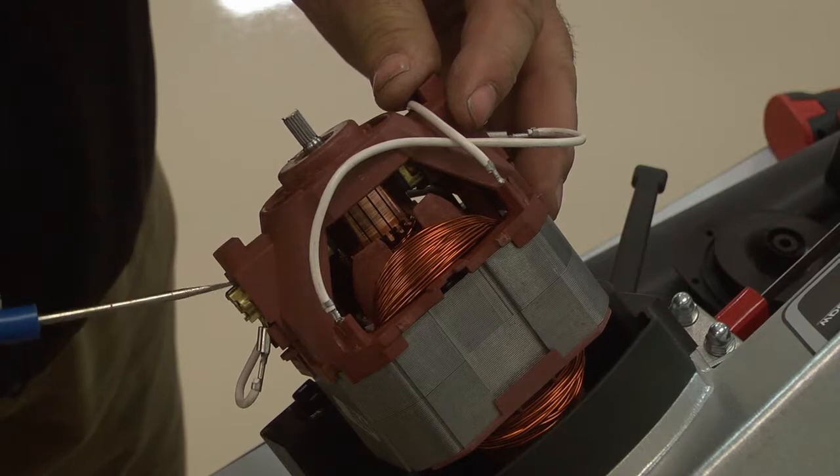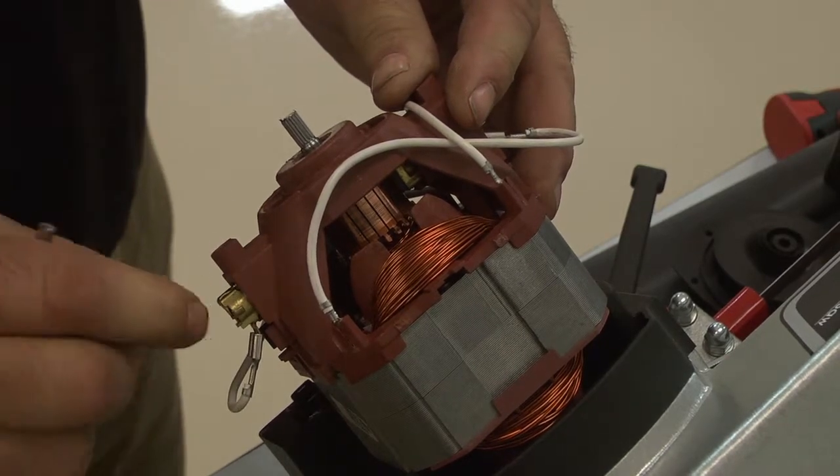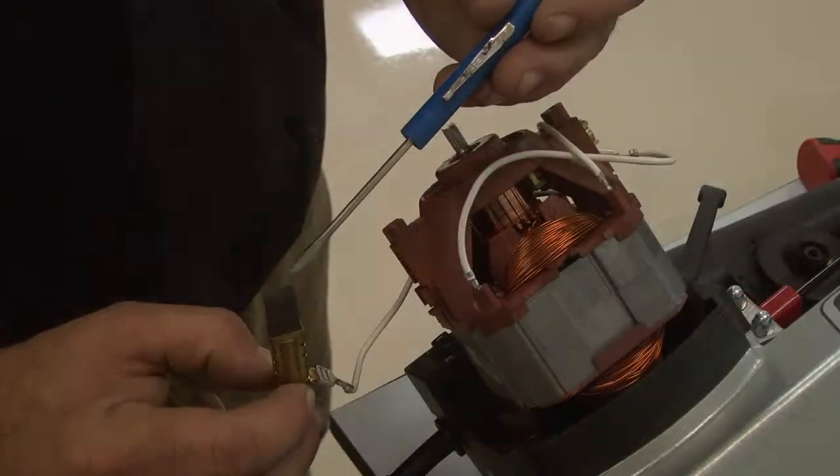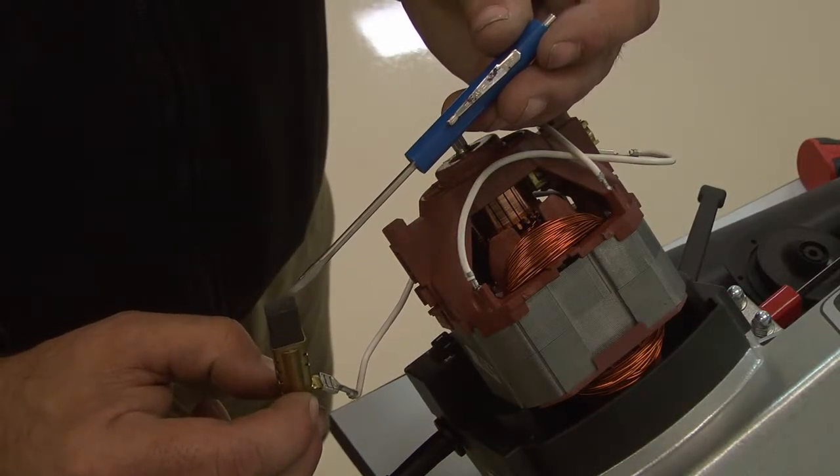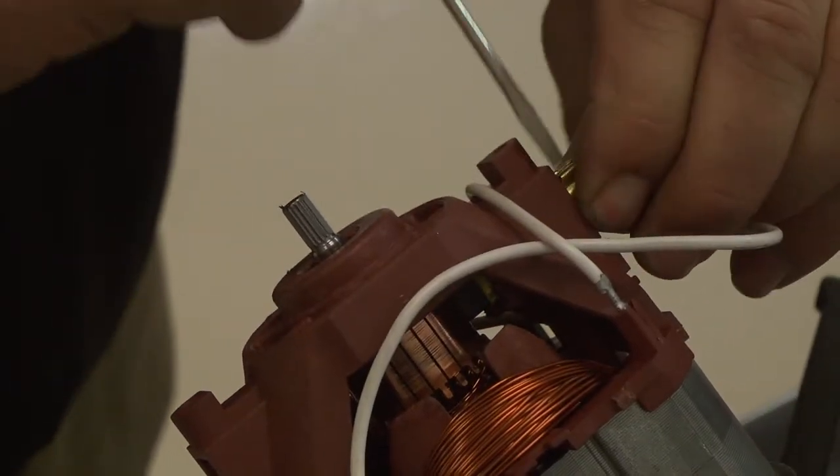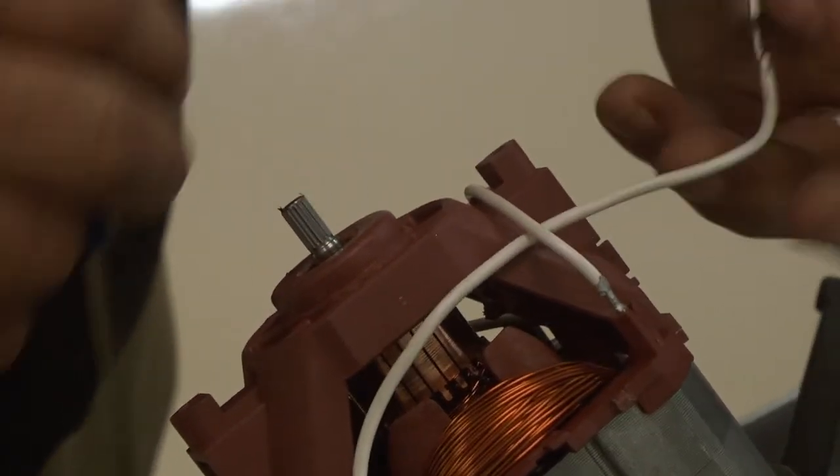Using a small flat blade screwdriver, gently pry the motor brush loose from the motor housing. Then simply use your fingers to remove the brass receptacle and motor brush. Follow the same procedure for the motor brush on the other side of the motor.